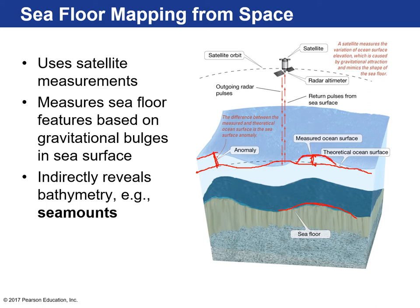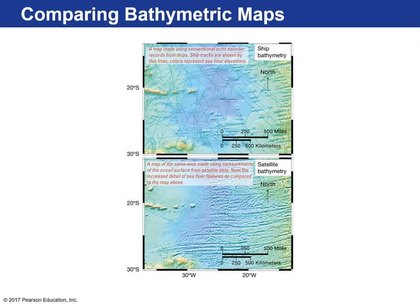Scientists realized they could measure these sea surface anomalies to indirectly reveal what the ocean floor is like — a huge step in creating the maps we look at today. If you go to Google Earth or Google Maps in satellite mode, you can go out into the ocean and see all the major seafloor features: mid-ocean ridges, deep ocean trenches, volcanic features, and submarine canyons.